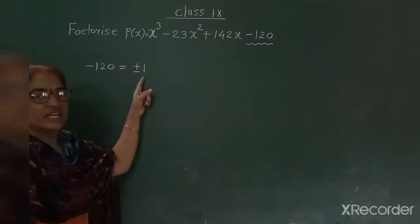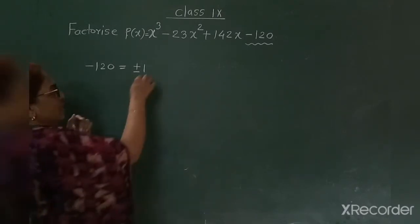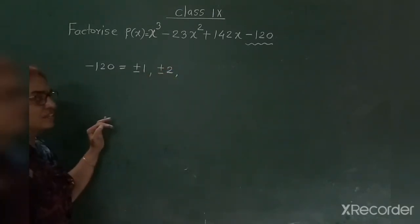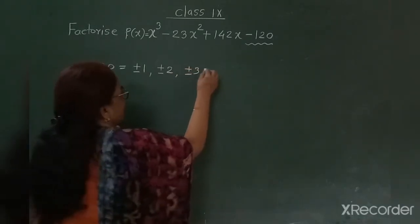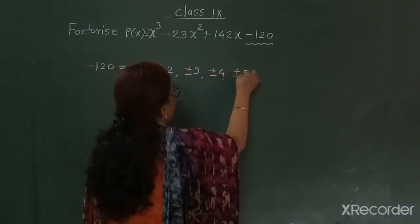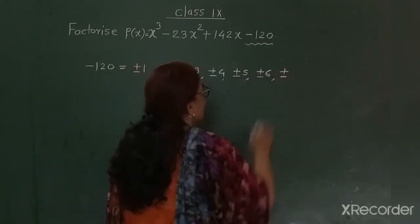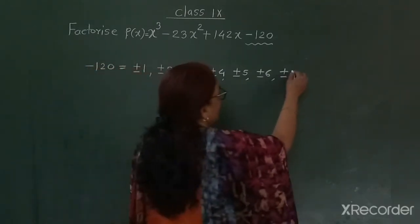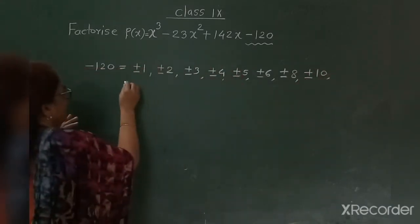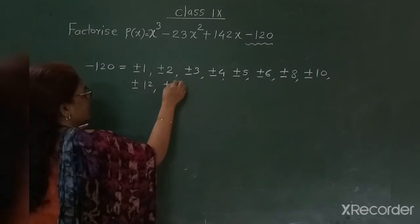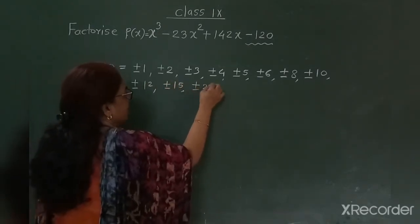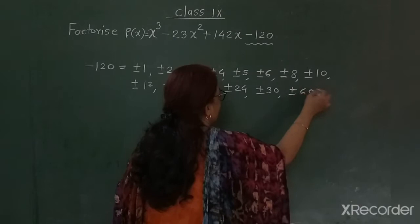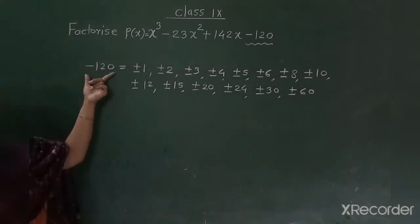You know that 1 is a factor of each and every number, so plus-minus 1 are its factors. Since 120 is divisible by 2, plus-minus 2 is another factor. Similarly, plus-minus 3, plus-minus 4, plus-minus 5, plus-minus 6. Plus-minus 7 won't be a factor because 120 is not divisible by 7. Next factors are plus-minus 8, plus-minus 10, plus-minus 12, plus-minus 15, plus-minus 20, plus-minus 24, plus-minus 30, and last plus-minus 60. These are all factors of negative 120.